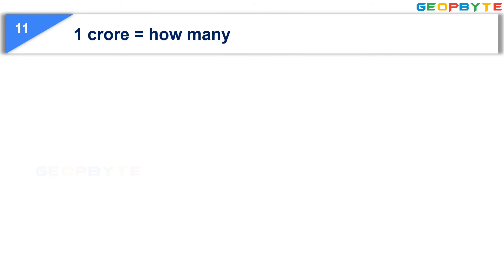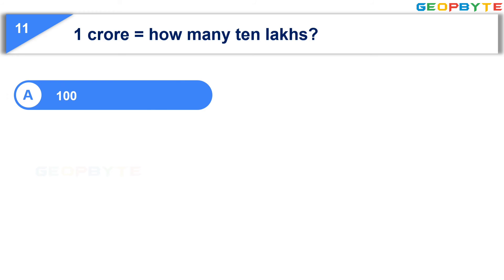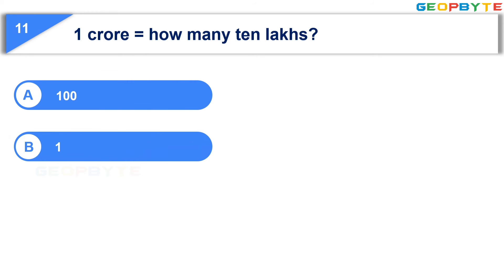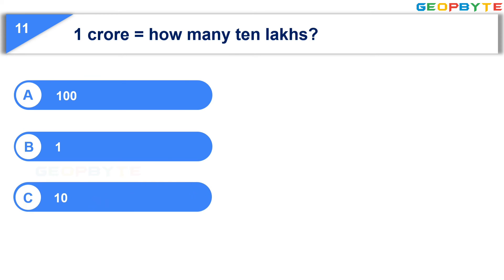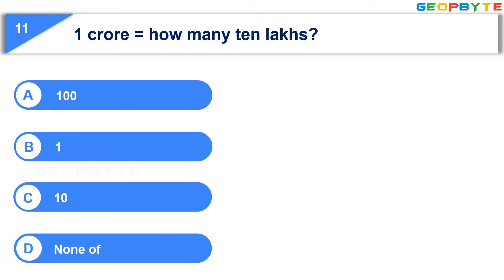1 crore is equal to how many? (10,000,000). Option A: 100, Option B: 1, Option C: 10, Option D: 10,000,000. Your time starts now.